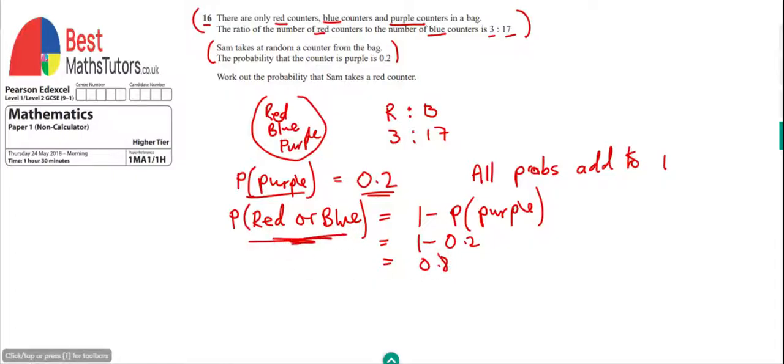So that's the probability of getting red or blue. And what we want to find out is what's the probability that Sam will choose a red counter from the bag. Well, the first bit of information we calculated was that the number of counters is in the ratio 3 to 17, and that will also mean that the probabilities are in the ratio 3 to 17. So the probability of getting a red counter to the probability of getting a blue counter will also be in that ratio, because it's proportional to the number of counters that we have. So really what we need to do is take this 0.8 and split it into this ratio. So if we add those together, that gives us the total of the ratio, which is 20.